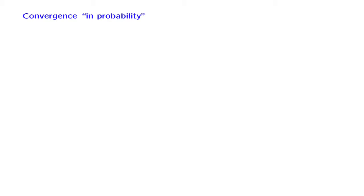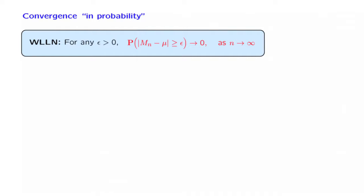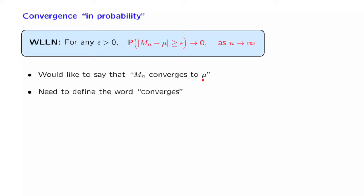We will now take a step towards abstraction and discuss the issue of convergence of random variables. Let us look at the weak law of large numbers. It tells us that with high probability, the sample mean falls close to the true mean as n goes to infinity. We would like to interpret this statement by saying that the sample mean converges to the true mean. However, before we can make such a statement, we should first define carefully the word 'converges,' and we need a notion of convergence that refers to convergence of random variables.